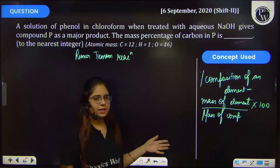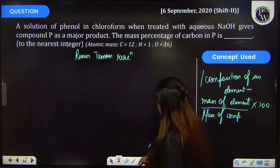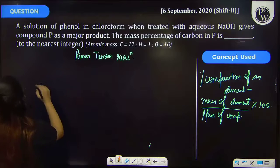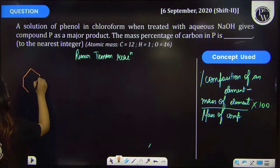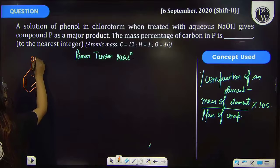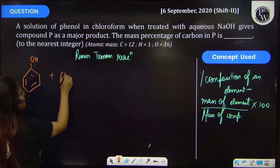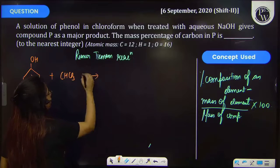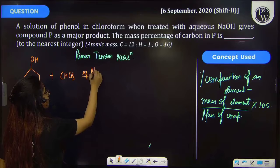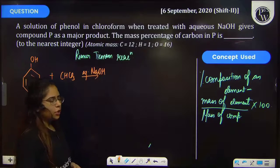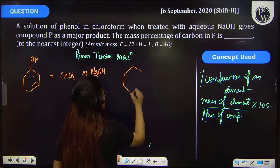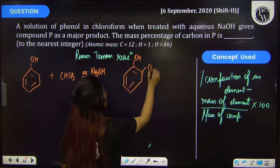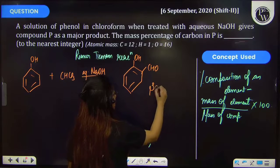So by using this concept, let's calculate the mass percent of the carbon. First of all, let's write the equation of this reaction. So phenol, it is reacting with chloroform, that means CHCl3, and in the presence of aqueous NaOH. So here product formed is salicylaldehyde whose structure is CHO, that is salicylaldehyde.